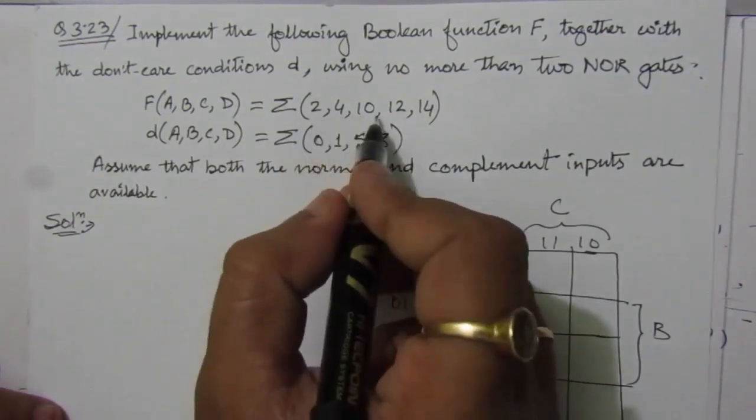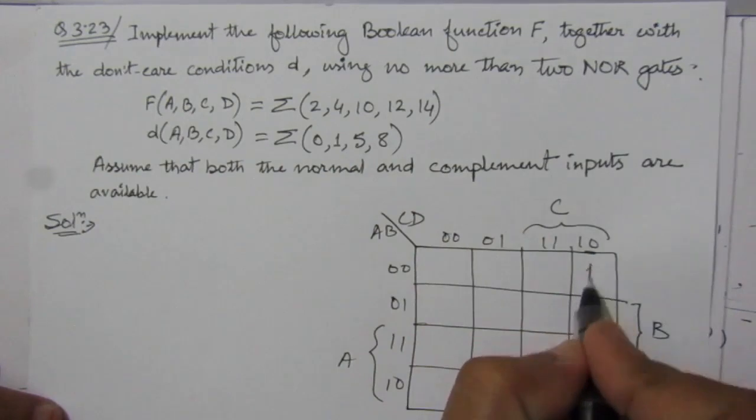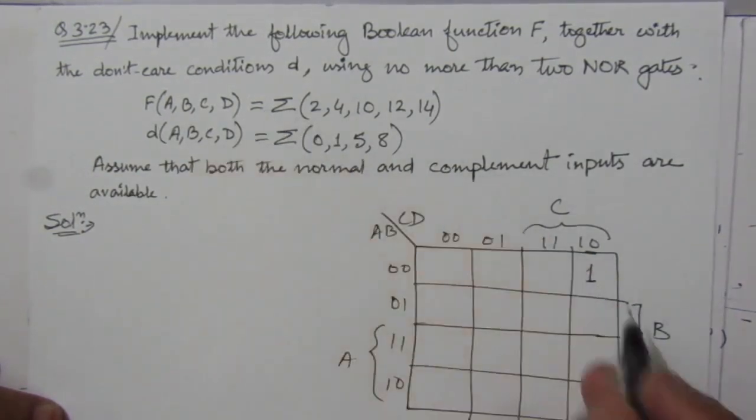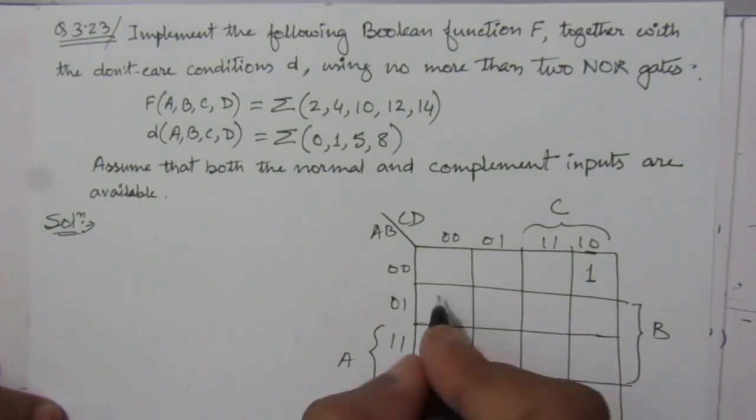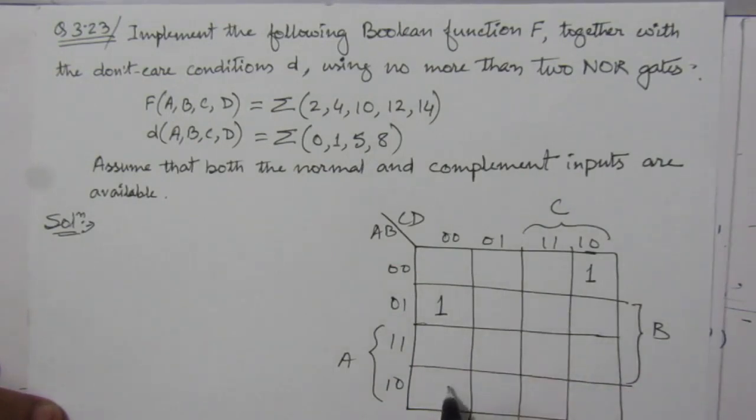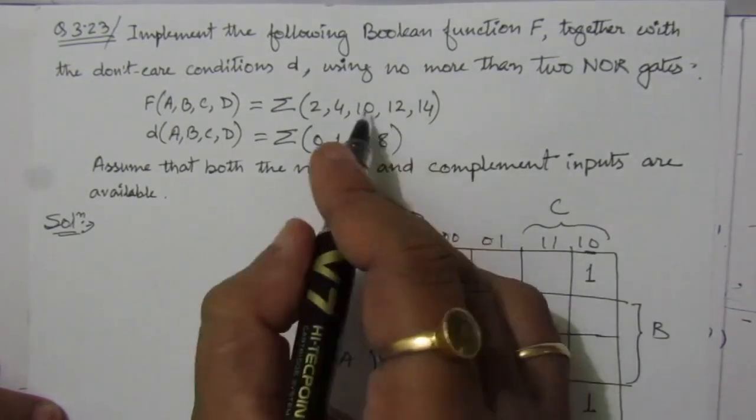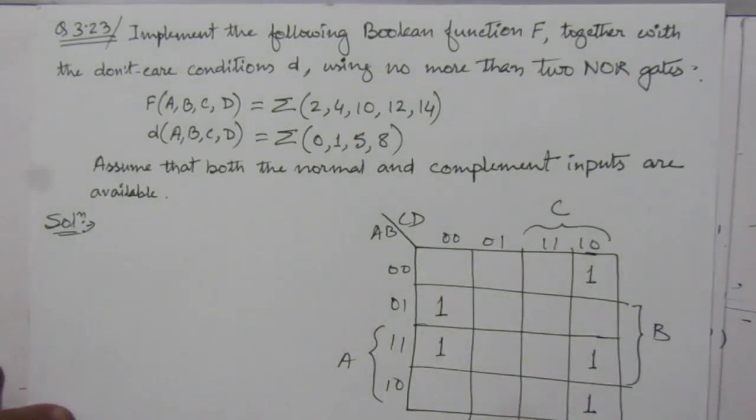The function values are at minterms 2, 4, 10, 12, 14. So we place 1s at positions 0, 1, 2... putting a 1 at position 2, then 4, then 10, 12, and 14. So this is the function.